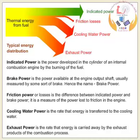Friction power or losses is the difference between indicated power and brake power. It is the measure of the power lost to friction in the engine. Cooling water power is the rate at which energy is transferred to the cooling water. Exhaust power is the rate at which energy is carried away by the exhaust products of the combustion process.